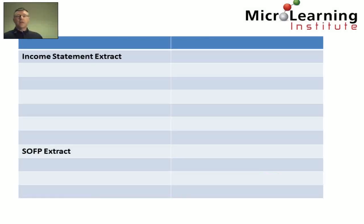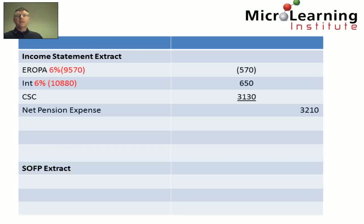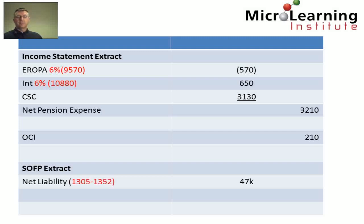Let's see how that translates to an income statement extract and a statement of financial position extract. The net of the expected return, the interest, and the current service cost is recognised as a net pension expense in profit and loss — totalling $3.21 million in our case. Additionally, the $210,000 re-measurement loss is recognised in other comprehensive income. On the statement of financial position, the closing net liability — the difference between the closing fair value of plan assets and the closing present value of plan liabilities — is recognised as a net liability.